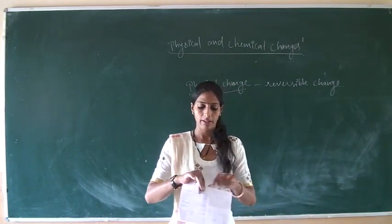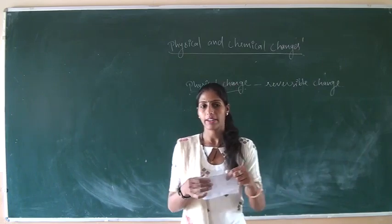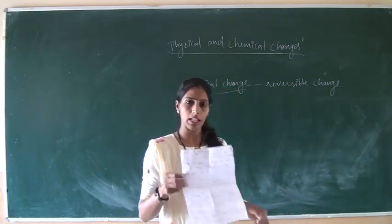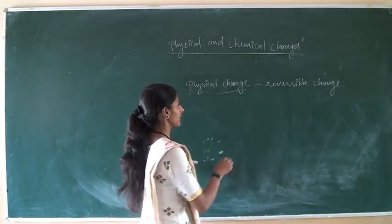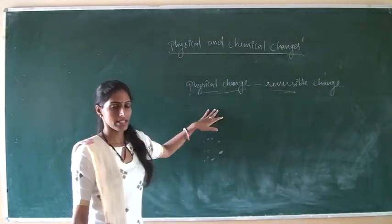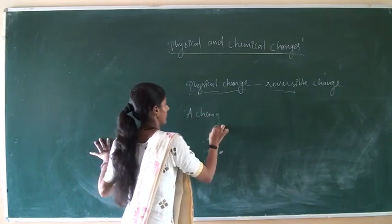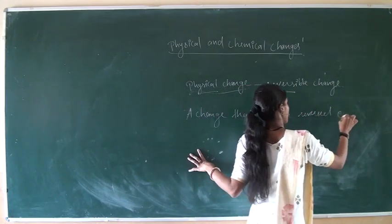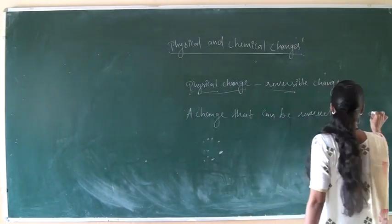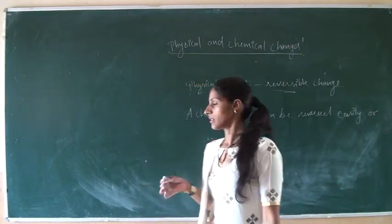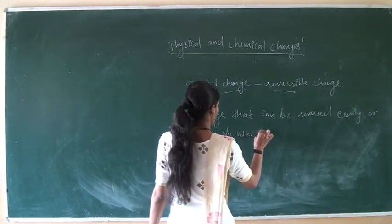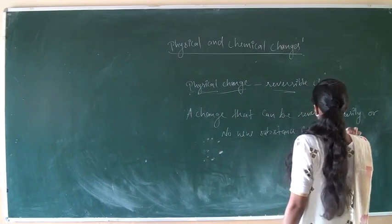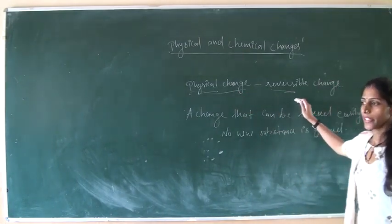When we fold this paper first in one round and then a second round, after opening the first round and second round, we will get the original paper back. This is reversible change or physical change — a change that can be reversed easily and where no new substance is formed. This is the physical change or reversible change.